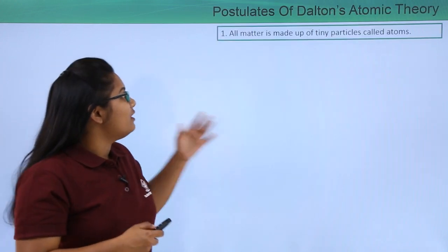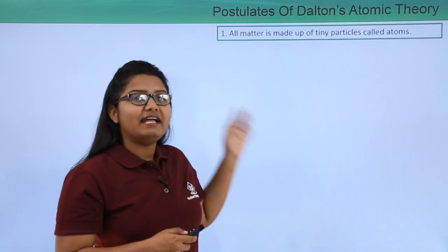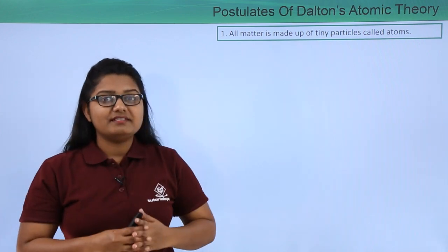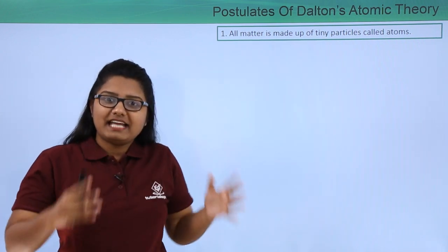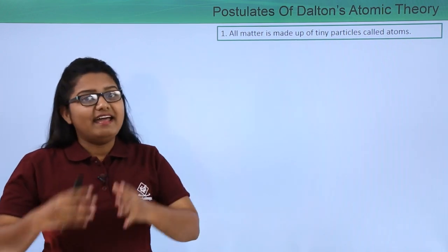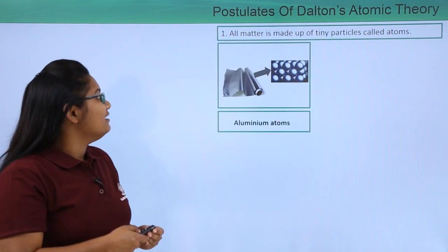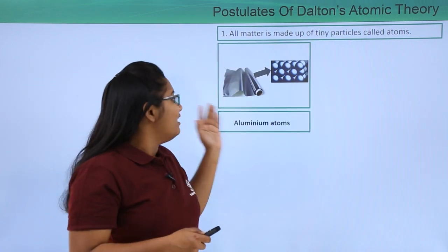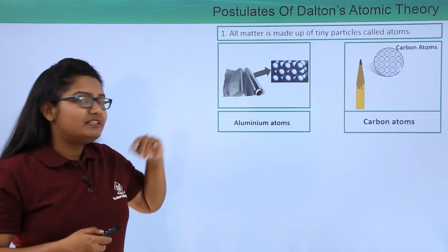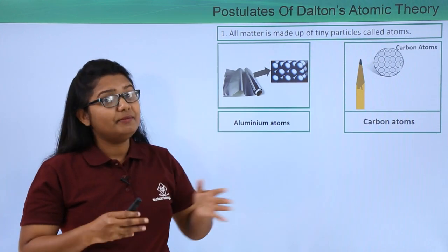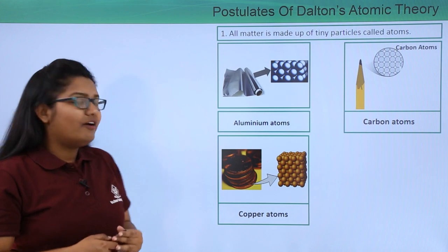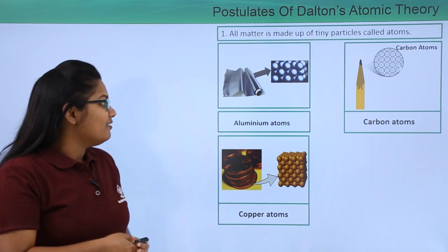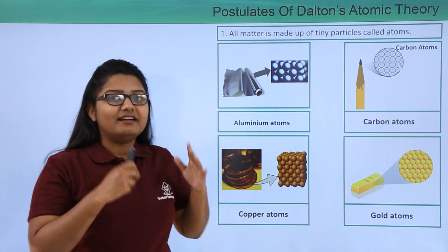The first postulate of Dalton's atomic theory says that all the matter in this universe is made up of tiny particles which are atoms. For example, aluminium foil is made up of aluminium atoms, the tip of a pencil is made up of carbon atoms, and copper coins are composed of copper atoms.